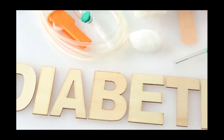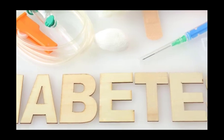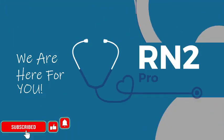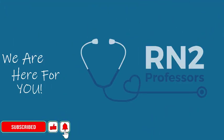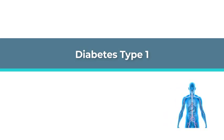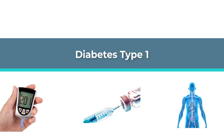Hello, this is Professor Wick from RN2 Professors with a review video on Diabetes Type 1. Diabetes is a disorder in which the body does not produce enough or respond normally to insulin, causing blood sugar or glucose levels to be abnormally high. These questions center around Type 1 diabetes and focus on different phases of the nursing process. I will show you how to determine what the question is asking and how to get the correct answer, then explain the rationale for the correct and incorrect answers.